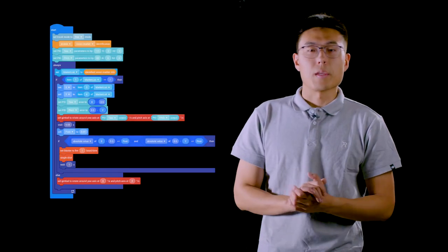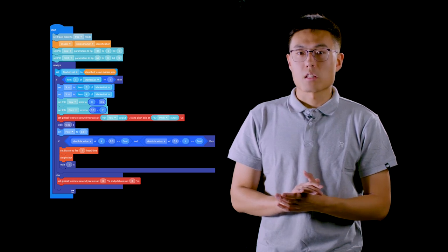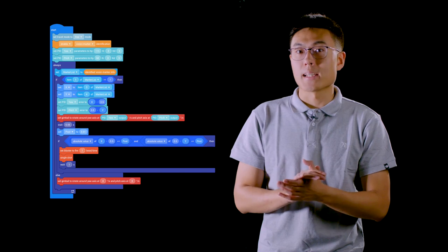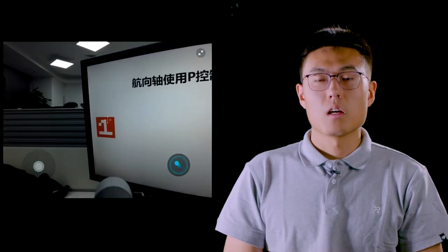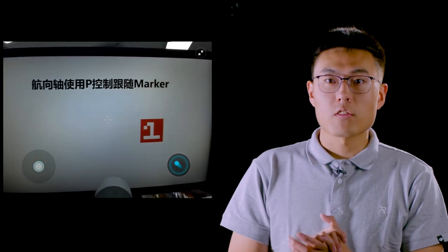Great, it's time to do some programming. The following program allows gimbal to track the visual marker. Let's first take a look at how the program works and then I will explain the program in detail. If we increase the Kp parameter, the gimbal will rotate faster so that the center of the field of view of the camera will track the visual marker.